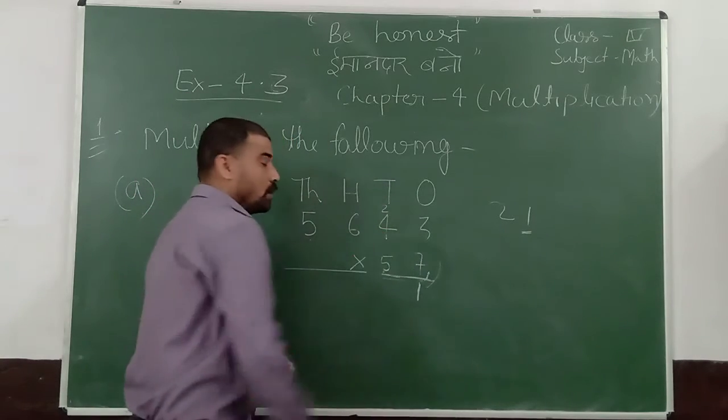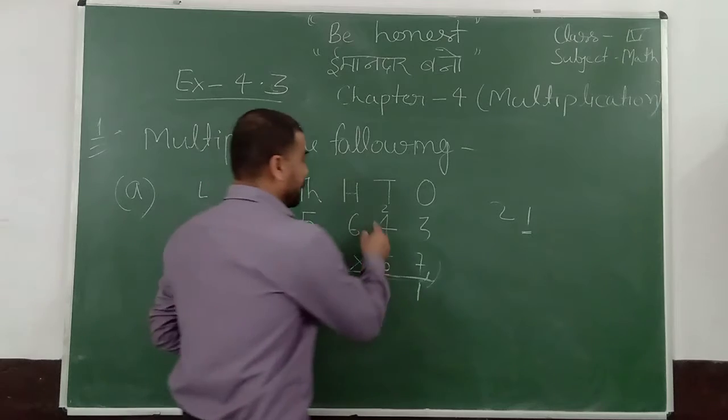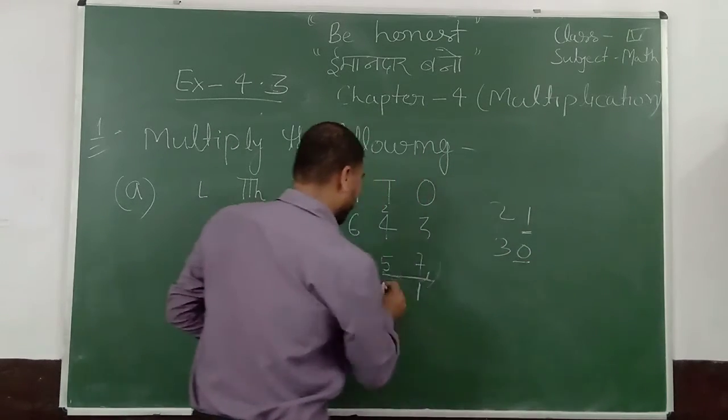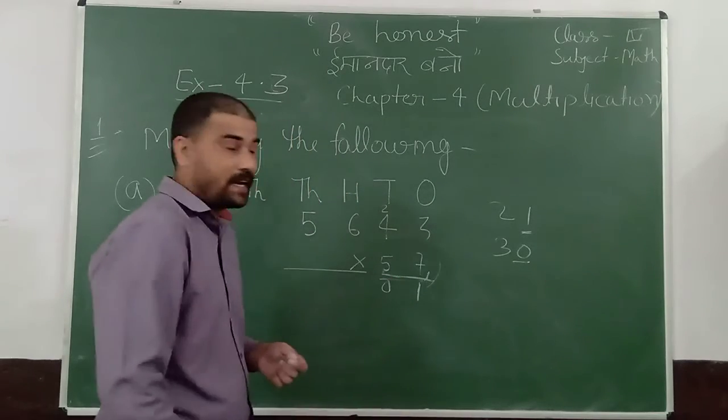7 into 4 is 28. 28 plus 2 is 30. So put 0 here. And carry 3.